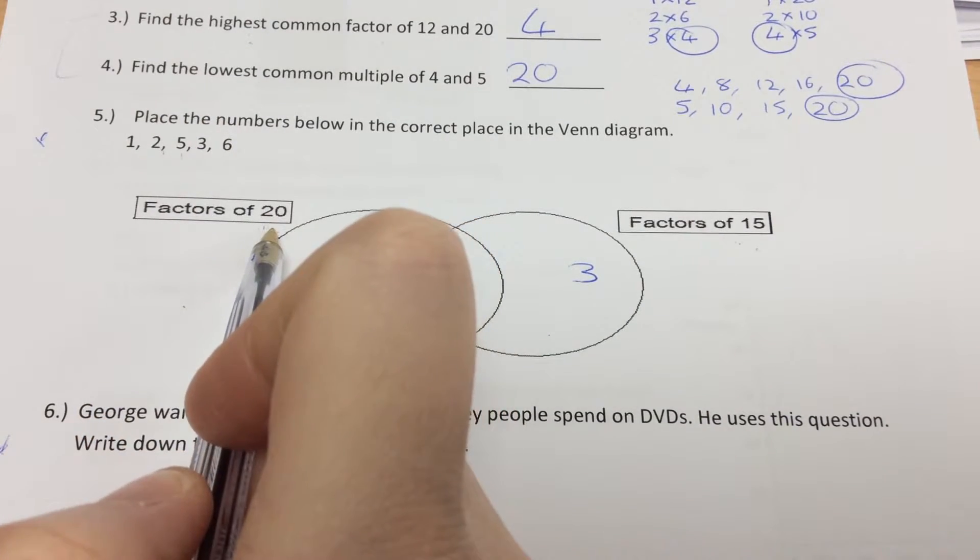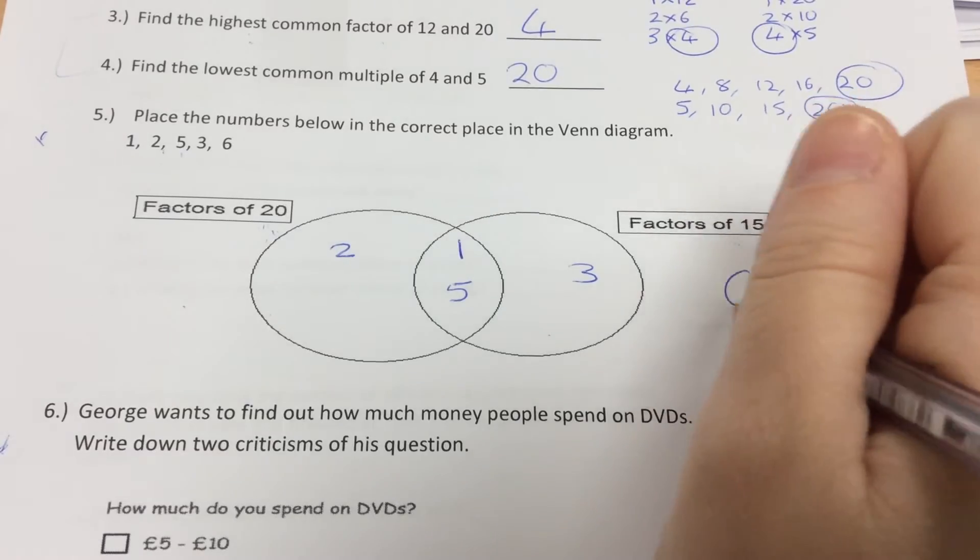6 does not go into 20. 6 does not go into 15, so 6 has to be on the outside.